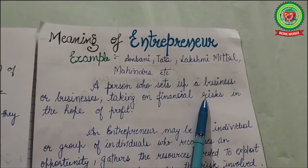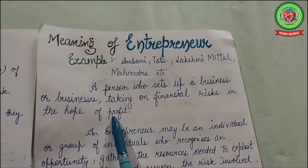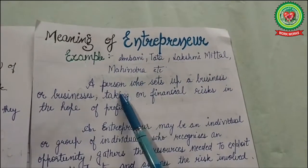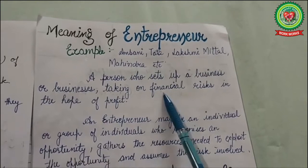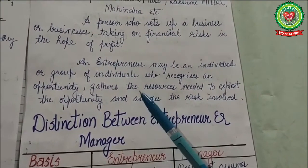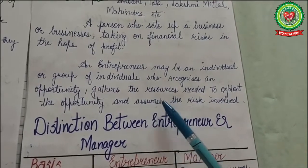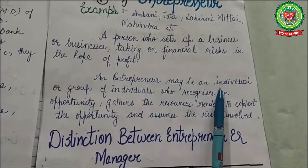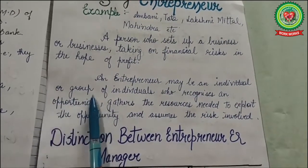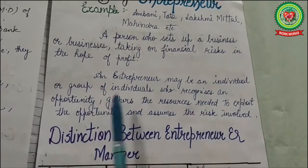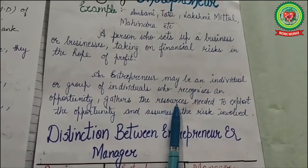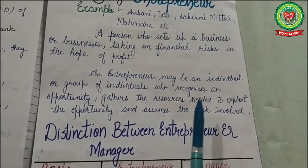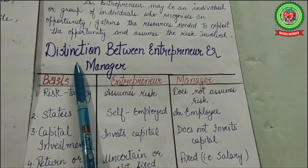Simply, a person who sets up a business taking on financial risks in the hope of profit is called an entrepreneur — for example, Ambani, Tata, Lakshmi Mittal, and Mahindra. Innovating, risk-bearing, and organizing are the main functions of an entrepreneur. An entrepreneur may be an individual or group of individuals who recognizes an opportunity, gathers resources to exploit it, and assumes the risk involved in business.